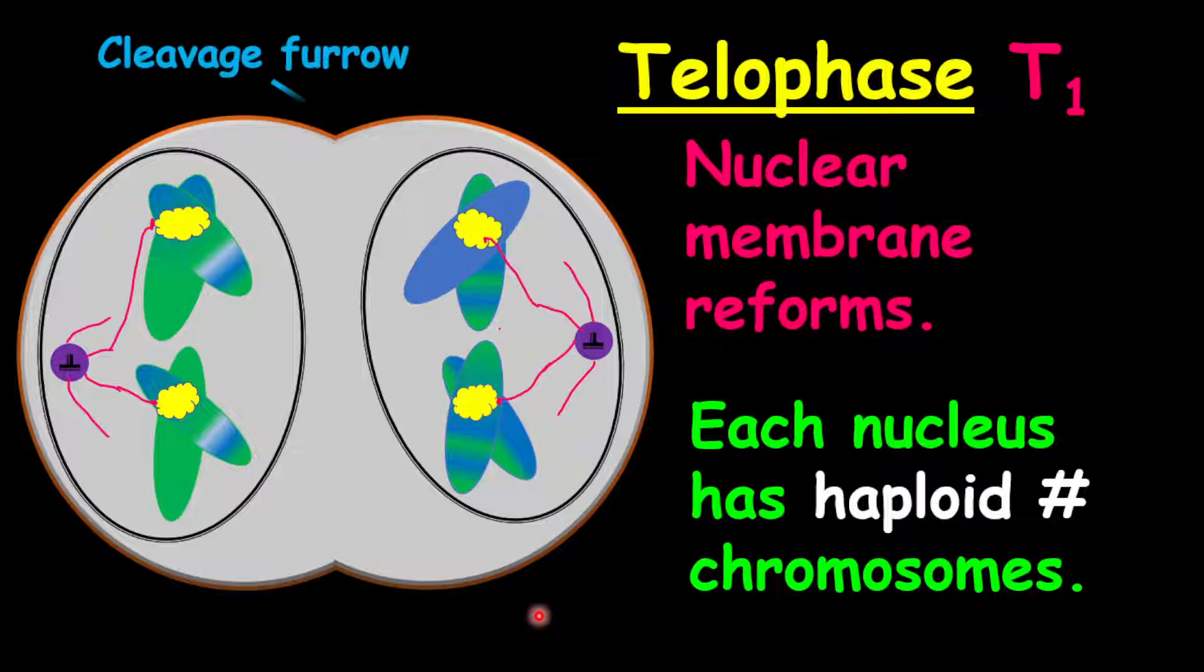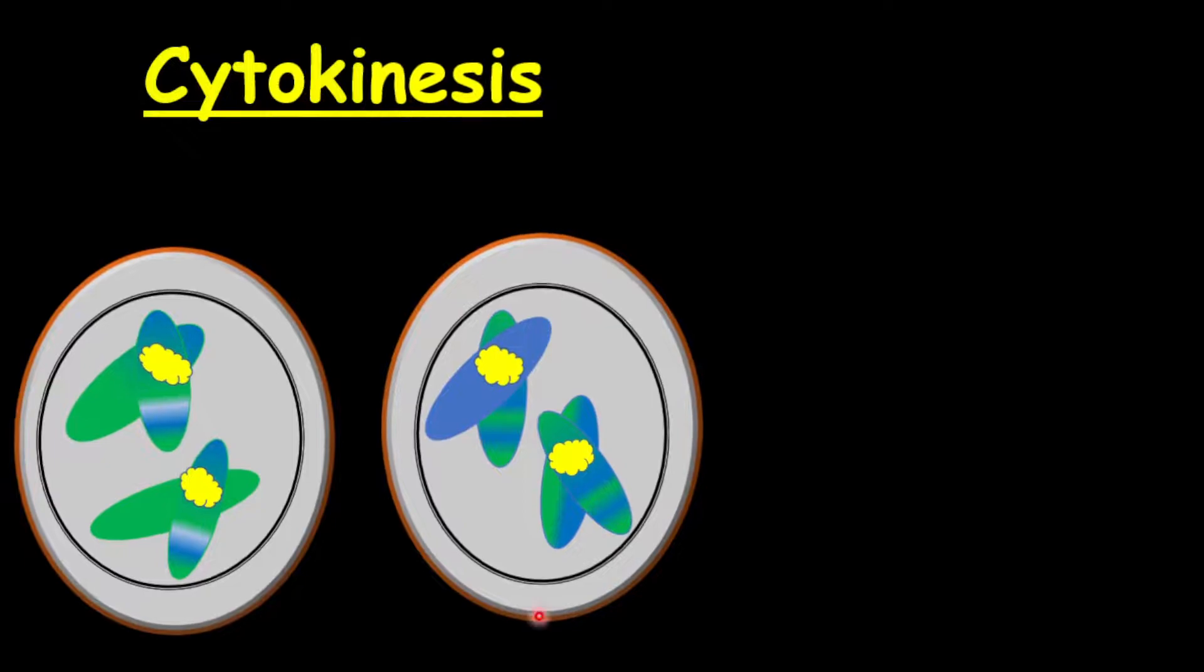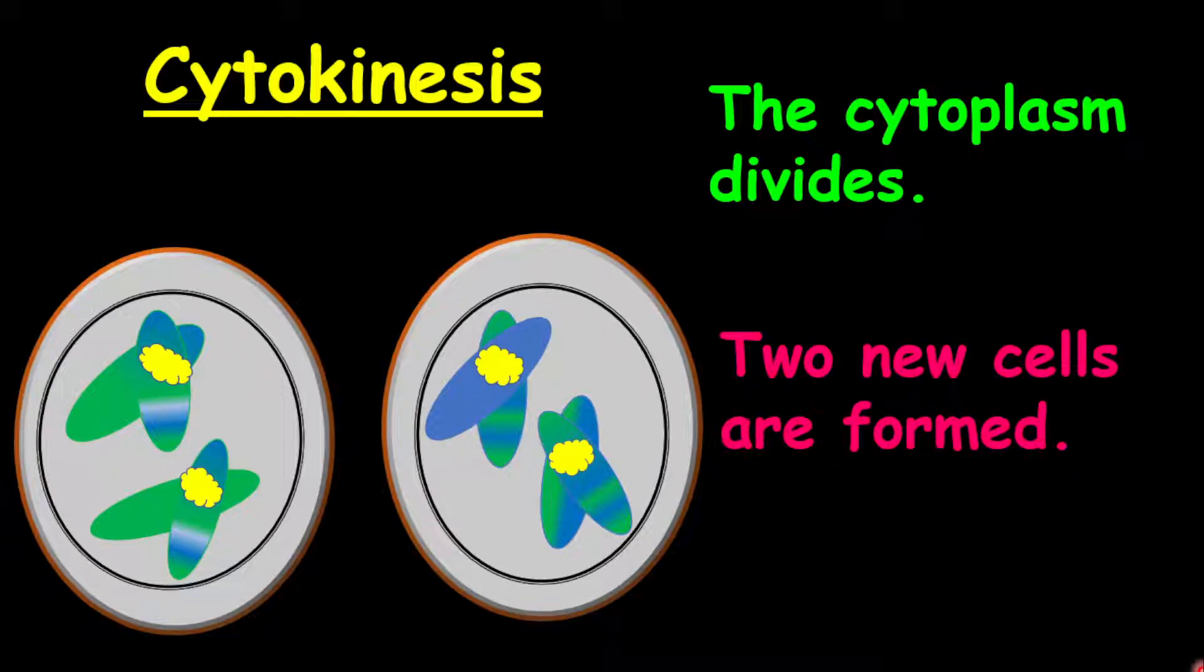Once telophase one is completed, then the cell will continue to divide along the cleavage furrow to divide the cytoplasm, and this process is called cytokinesis. And now we have our two new cells forming because of division of that cytoplasm. These two new cells now, they will undergo division two.